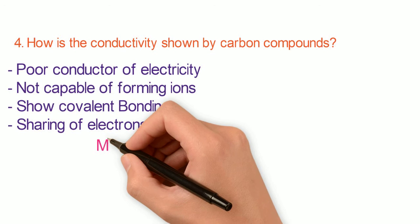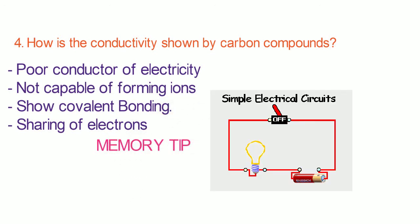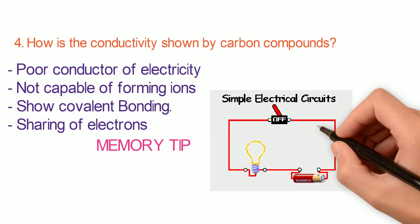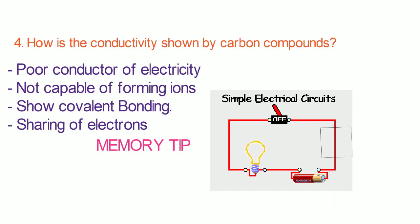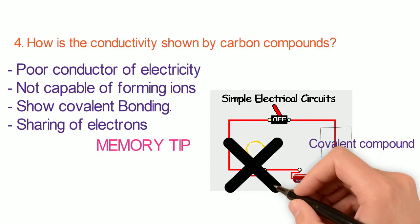Here is a memory tip for you. This is a simple electrical circuit in which the bulb glows. If you disconnect the circuit at any point and connect it again by using a covalent compound in that place, the bulb stops glowing, because covalent compound cannot conduct electricity.